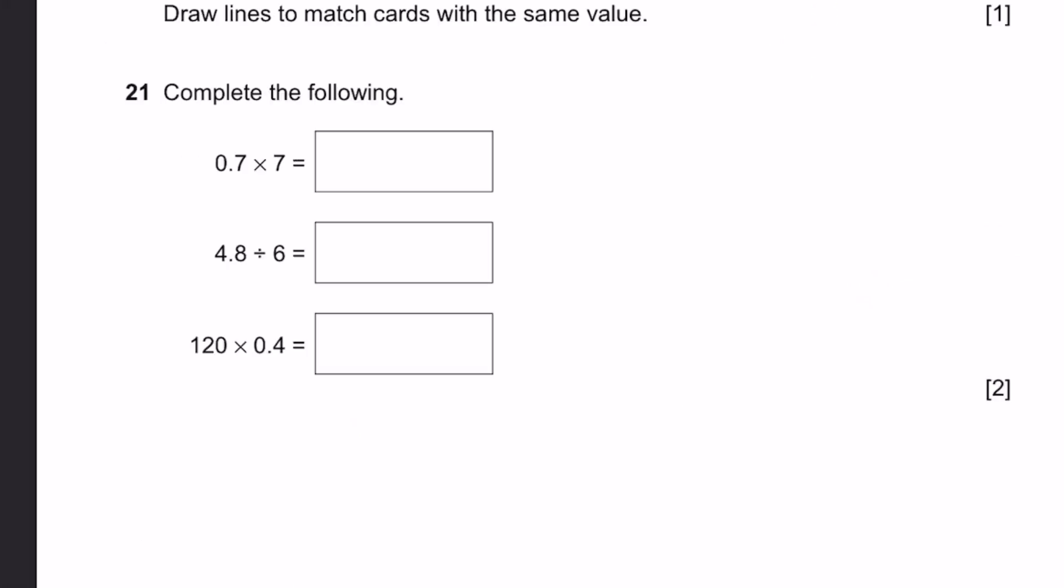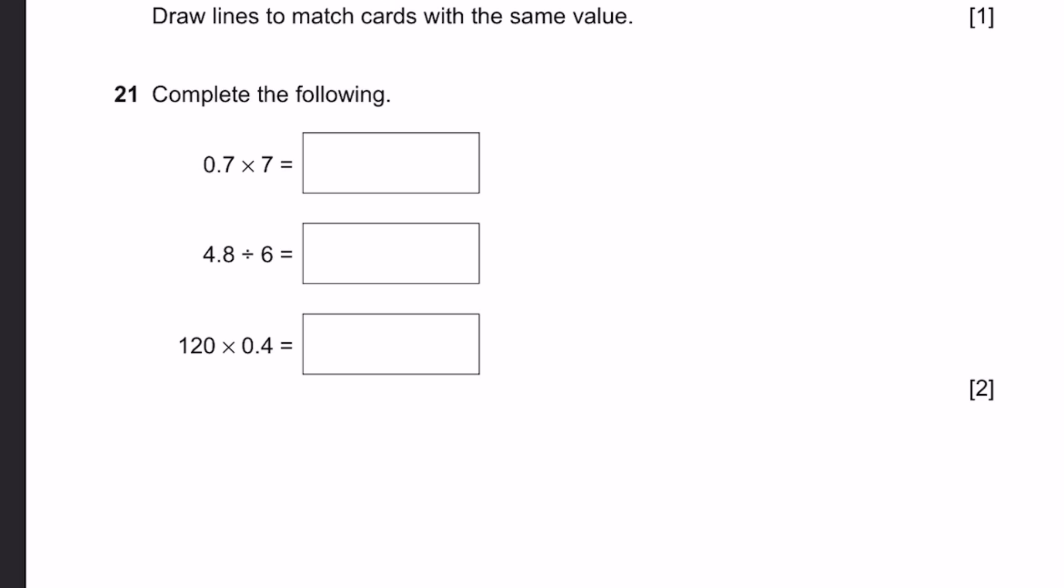Question 21. Complete the following. This is quite a straightforward question. 0.7 times 7 is equal to 4.9. 4.8 divided by 6 is 0.8. 120 times 0.4 is 48. That's the answer.